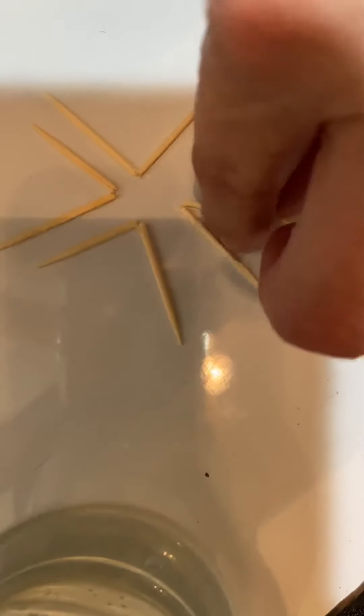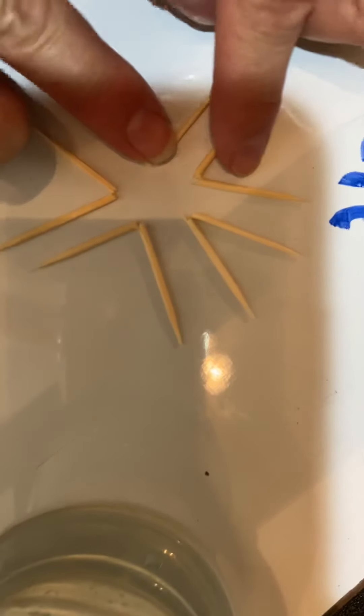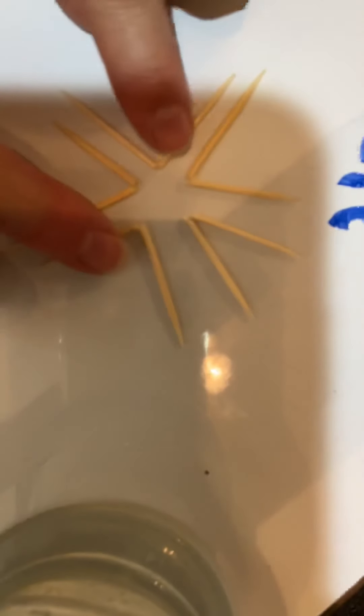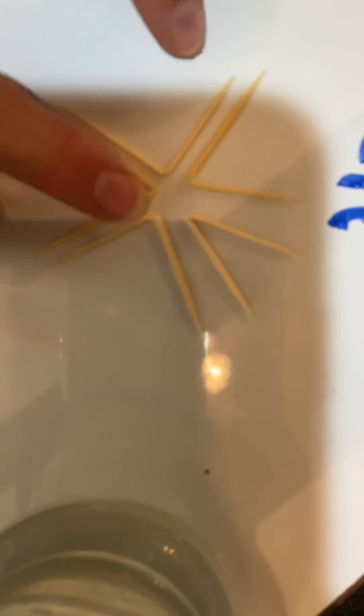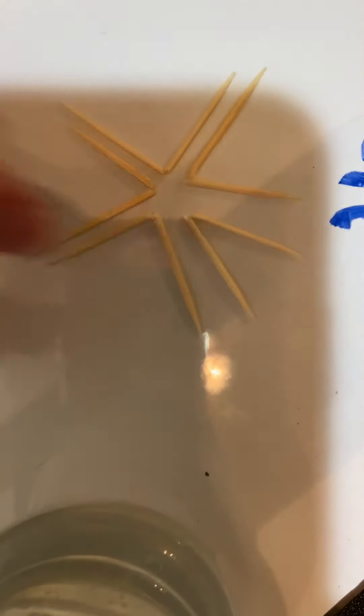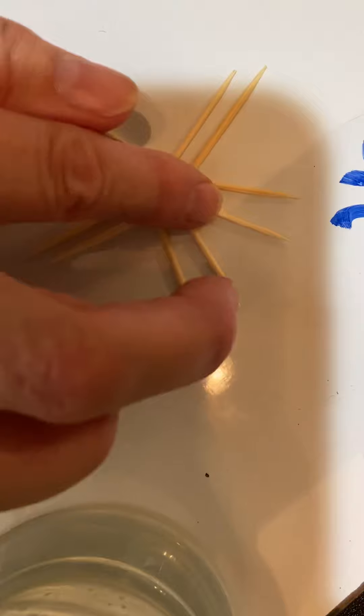So now I'm going to take five. I happen to have pre-bent them to make it a little bit easier for you to see. And you're going to put them in a shape that kind of looks like a star but nothing is touching. Okay, so the center kind of looks like a circle. If you notice, none of the wooden pieces are touching, they're all independent.